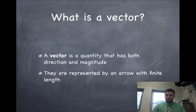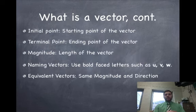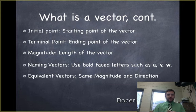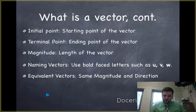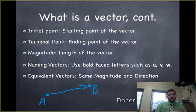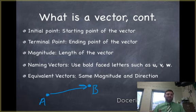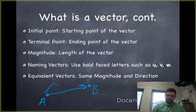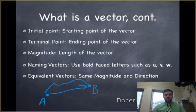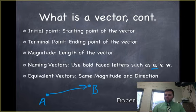So let's get into the vocab. You might want to pause here and copy some of this down. The initial point is the starting point of the vector. So if I had vector A going over to point B, we would say that A was the initial point, the starting point. The terminal point is just the ending point — where does the vector end? The magnitude is how long the vector is, what is this length from A to B? When we name vectors, we typically use bold-faced lowercase letters, so we would use a bolded U or a bolded B.